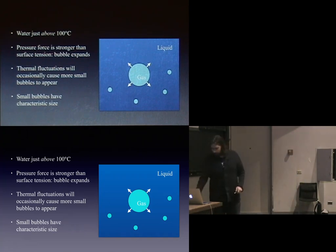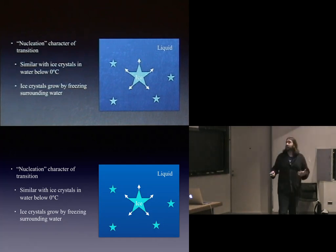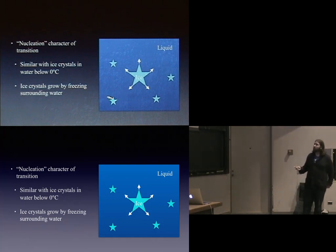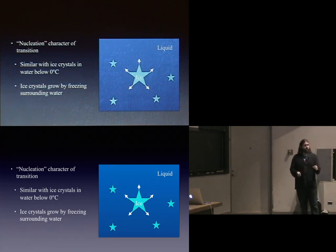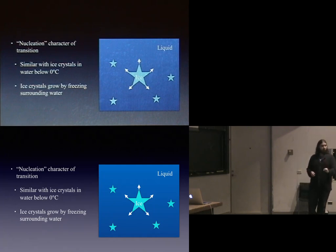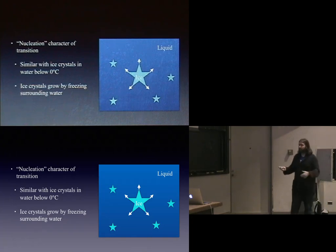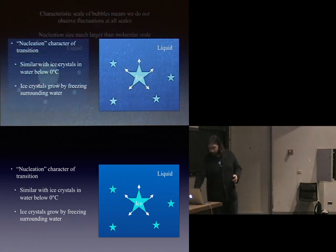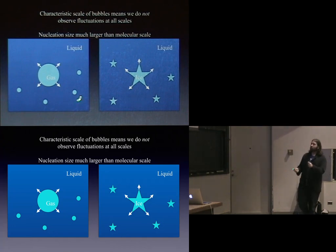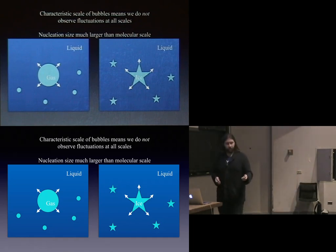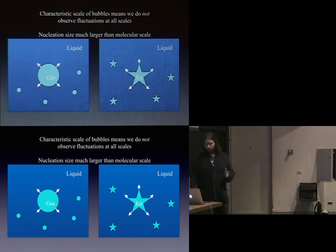Similarly, water freezing involves nucleation of little ice crystals that freeze the water around them and grow. The emphasis is that in a first-order phase transition — whether boiling or freezing — you have little nucleations of the new phase, like a small ice chunk in water or a bubble of water vapor, appearing with some characteristic size, then growing until the whole system freezes or evaporates. Importantly, you can see the ice crystals and bubbles — they're on a scale much larger than the molecular scale. That's a first-order phase transition.